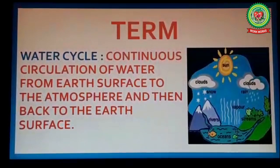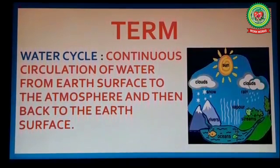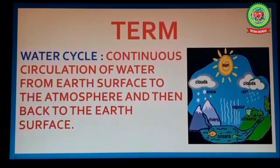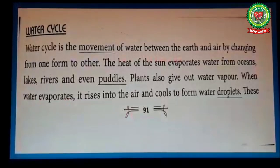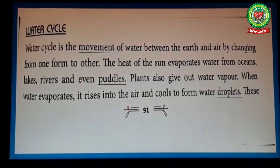First I will discuss the term water cycle: the continuous circulation of water from the earth's surface to the atmosphere and then back to the earth's surface. Now let's read — the water cycle is the movement of water between the earth and air by changing from one form to another.